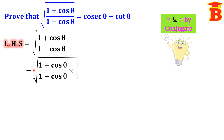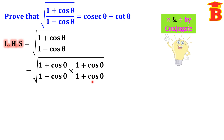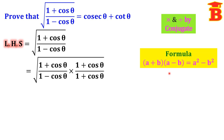So the next step: remember to write the square root of (1 plus cos theta) divided by (1 minus cos theta), multiplied and divided by the conjugate, that is (1 plus cos theta) divided by (1 plus cos theta). Now, the numerator becomes (1 plus cos theta) into (1 plus cos theta), which can be written as a whole square. For the denominator, we use the formula: (a plus b)(a minus b) equals a squared minus b squared.